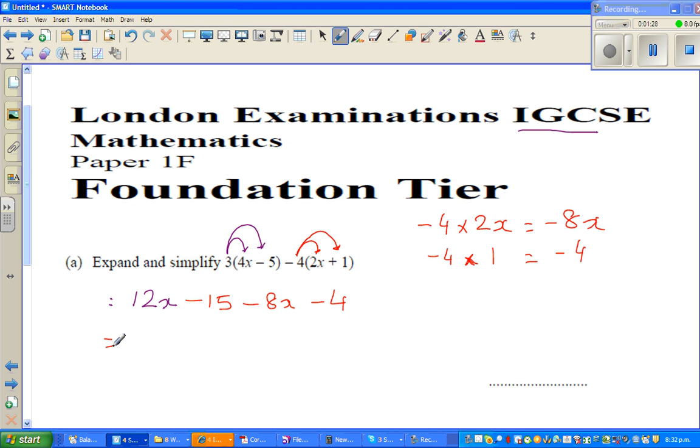Now the next step I call it grouping. It's always good to group the like terms. So it is 12x from here, and you've got a minus 8x here. This minus is with this 8x, not with 15, but this minus goes with 8.